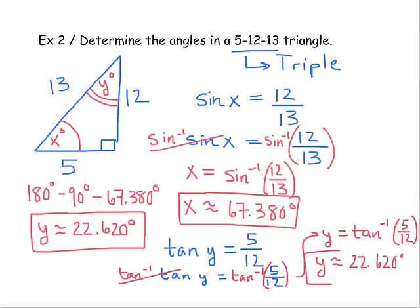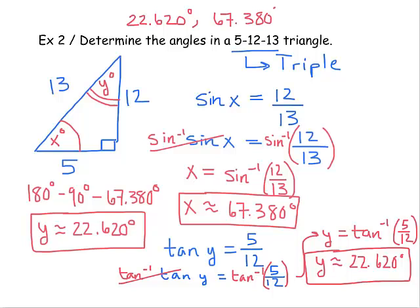This is a problem with many different ways to solve it — lots of different concepts you could apply. To summarize, the three angle measures are: the smallest angle at 22.620 degrees, the medium angle at 67.380 degrees, and the largest angle at 90 degrees. We knew it was a right triangle since 5-12-13 is a Pythagorean triple.